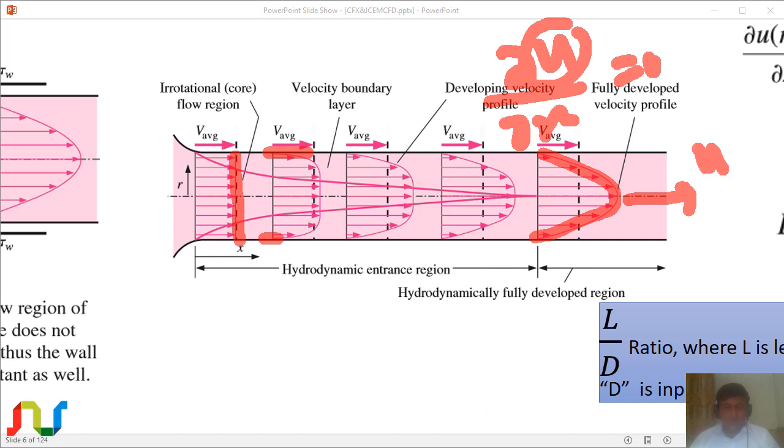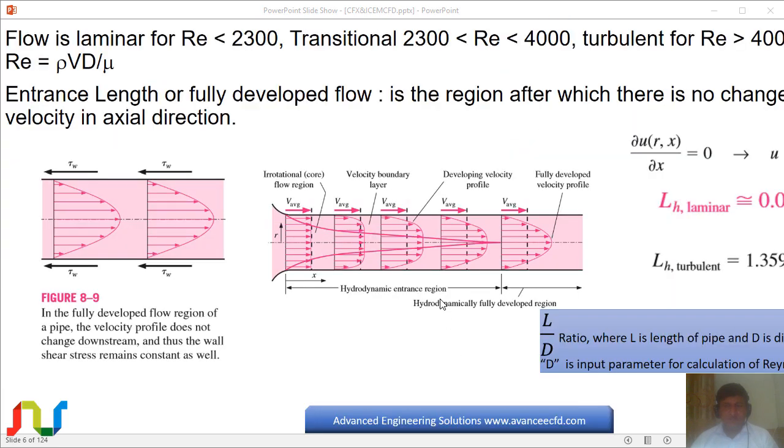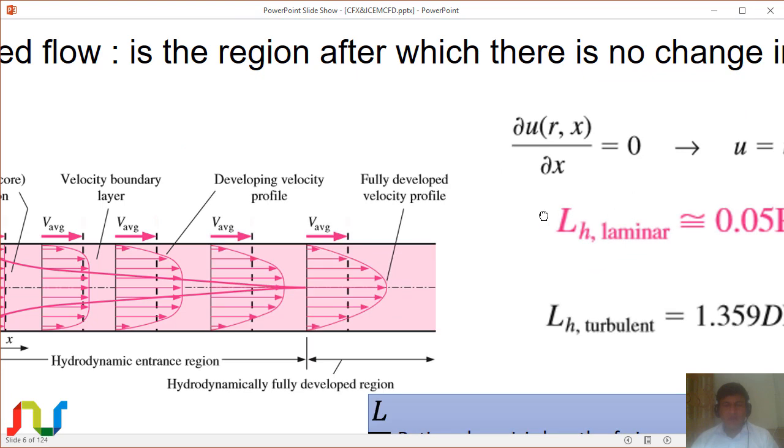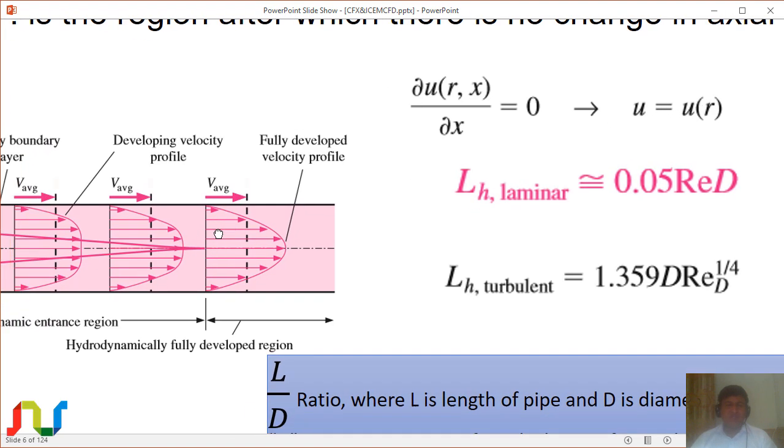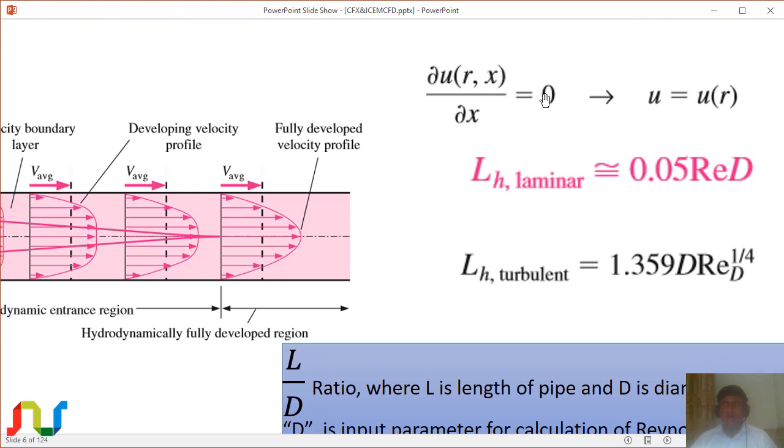Based on this definition, the velocity profile is not changing along the x direction but can change along the y direction. This means velocity is only a function of radius, not axial location.